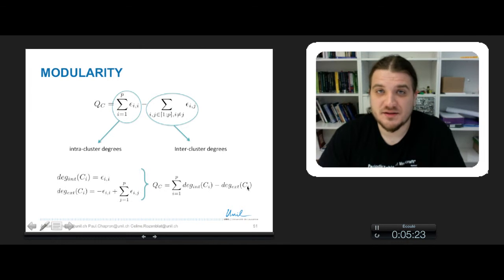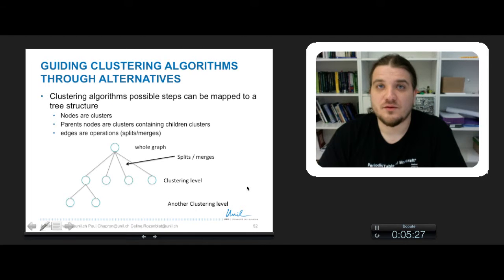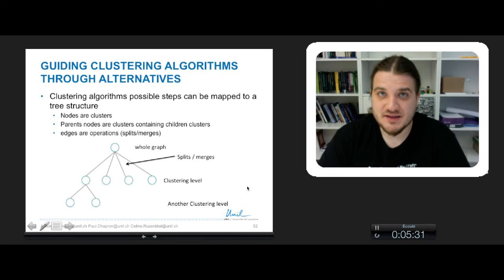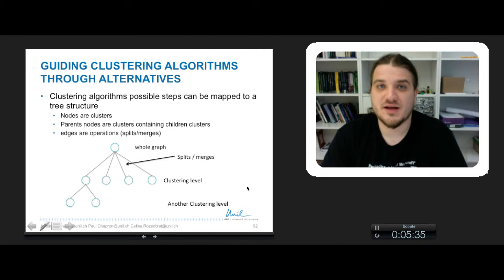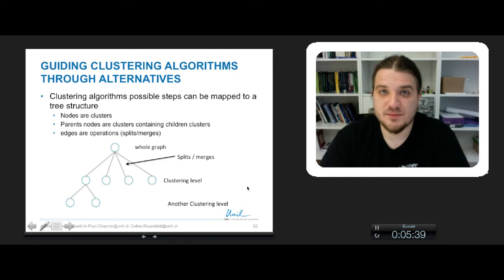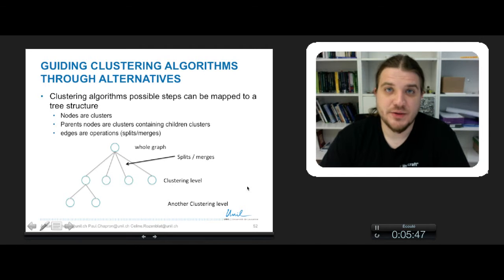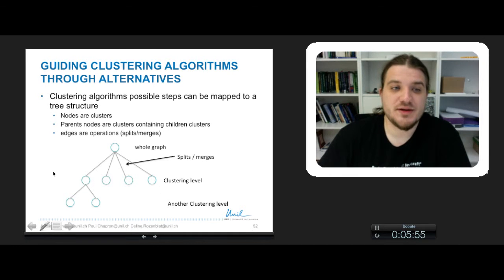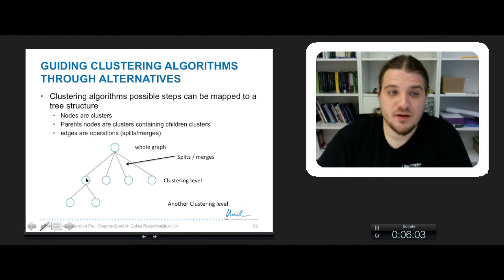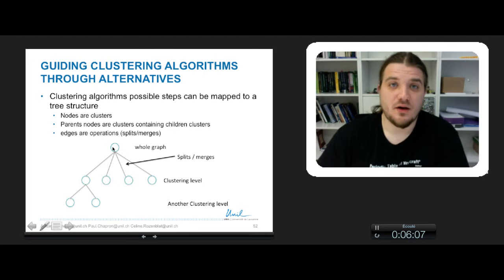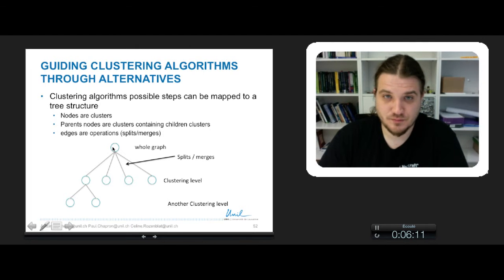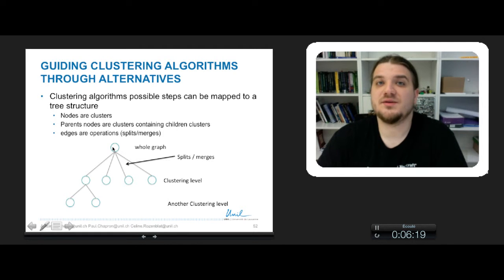So that's it for the mathematical definition of modularity of a clustering. To conclude, we will show how the modularity is used to guide the clustering algorithm between the different alternatives and to say where to stop the clustering process. We will use a graphical representation of the clustering process as a tree. In this tree, the nodes will be some clusters, and every level of the tree will be a clustering level.